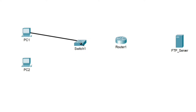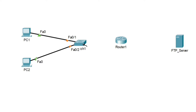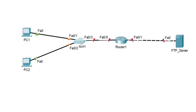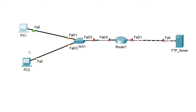Now let me connect these devices together. I am going to connect PC to switch, switch to router, and this router to the FTP server. Okay, this is my small lab. Now the first thing is we need to configure IP addressing.